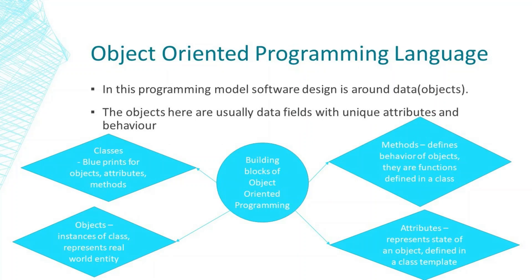Object-oriented programming language — as the name suggests, this programming model designs software around data or objects. The objects here are usually data fields with unique attributes and behavior. The building blocks of object-oriented programming are: classes, which are blueprints for objects with attributes and methods; methods, which define the behavior of objects and are functions defined in a class; objects, which are instances of a class representing a real-world entity; and attributes, which represent the state of an object defined in a class template.